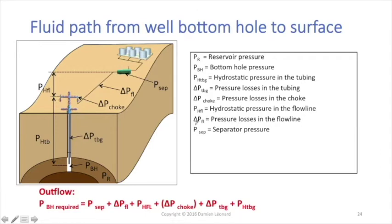Then we've got Delta P-FL which is the pressure loss in the flow line, and we end up with P-SEP, which is the separator pressure. To get the liquids to go from the well bottom hole up to the production separator,